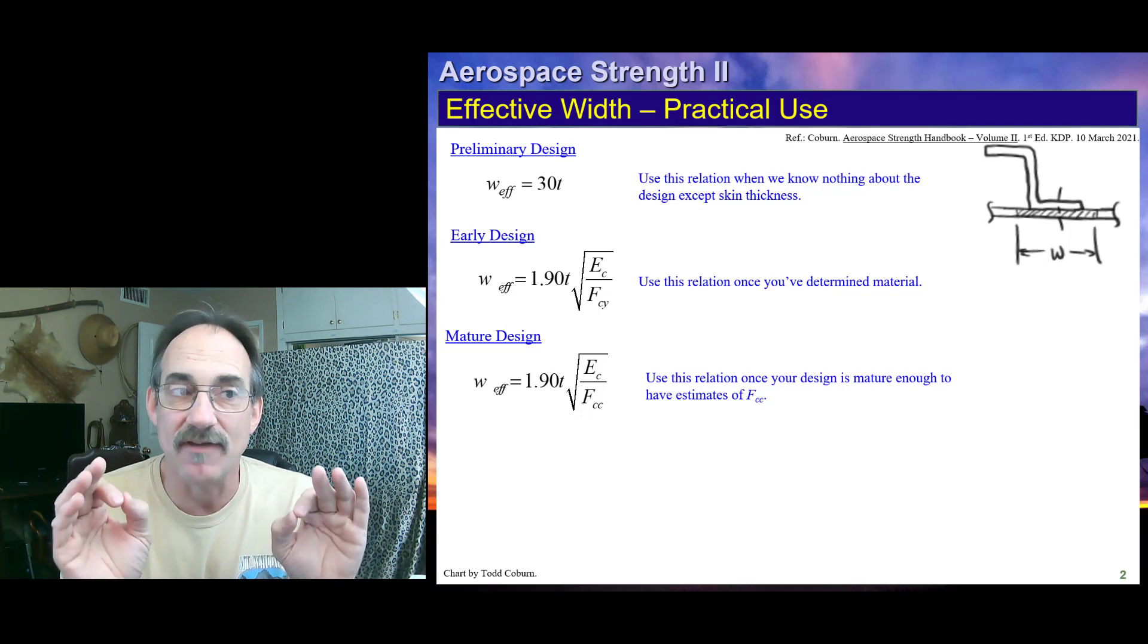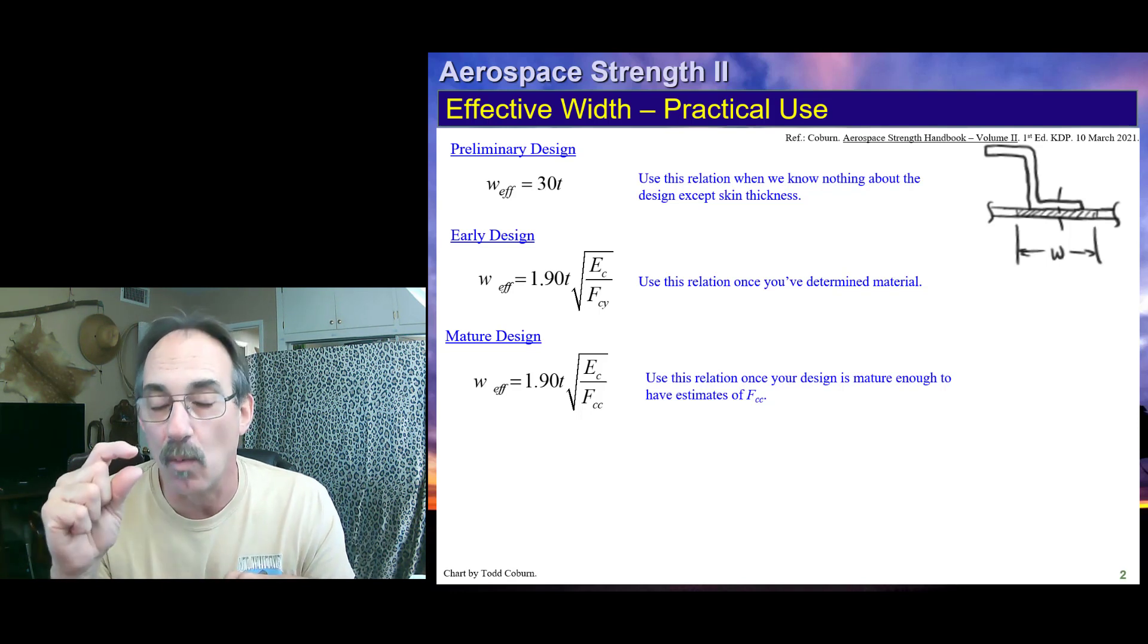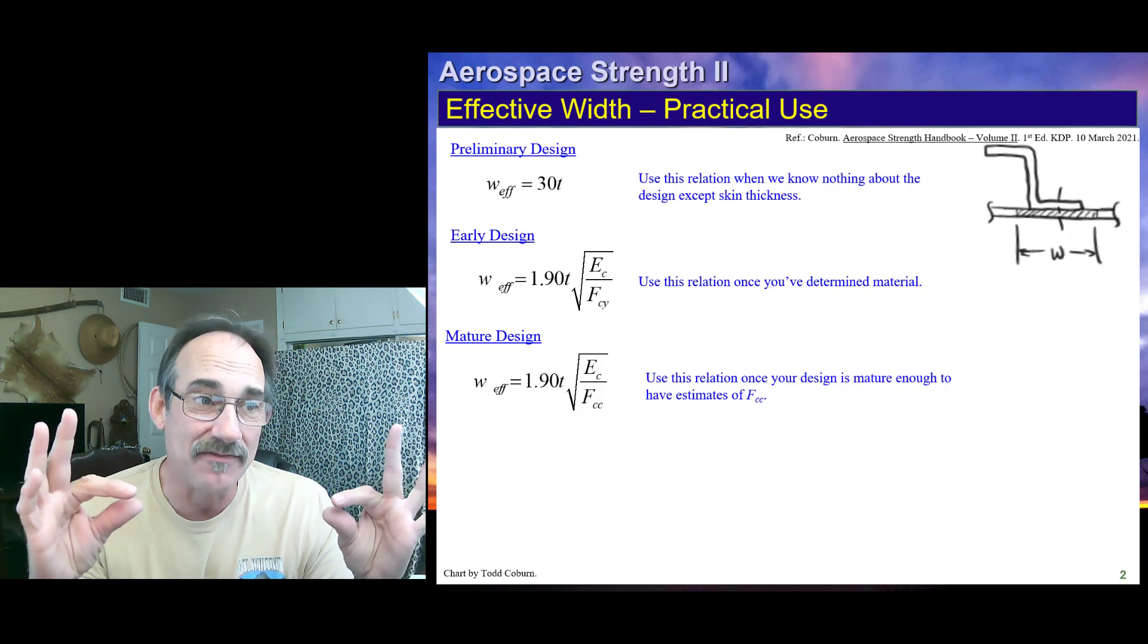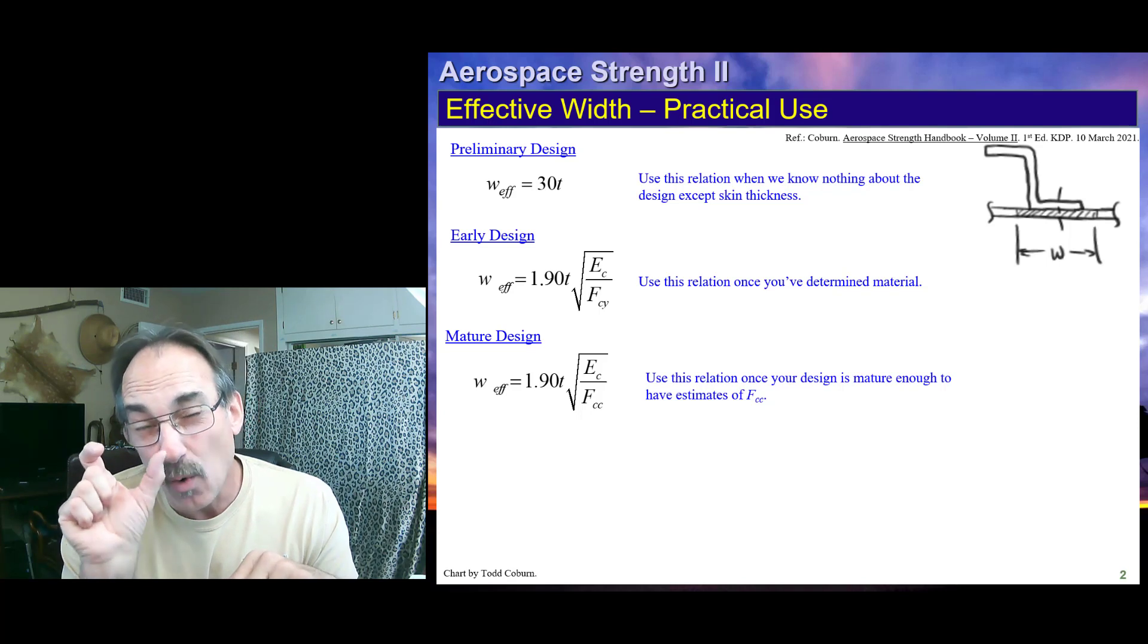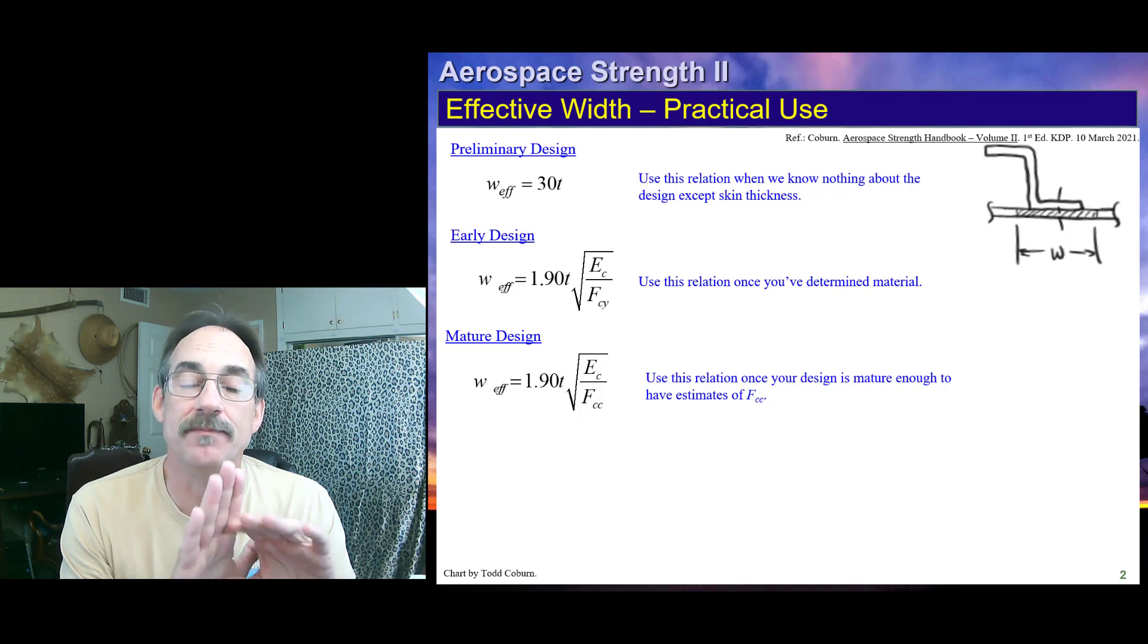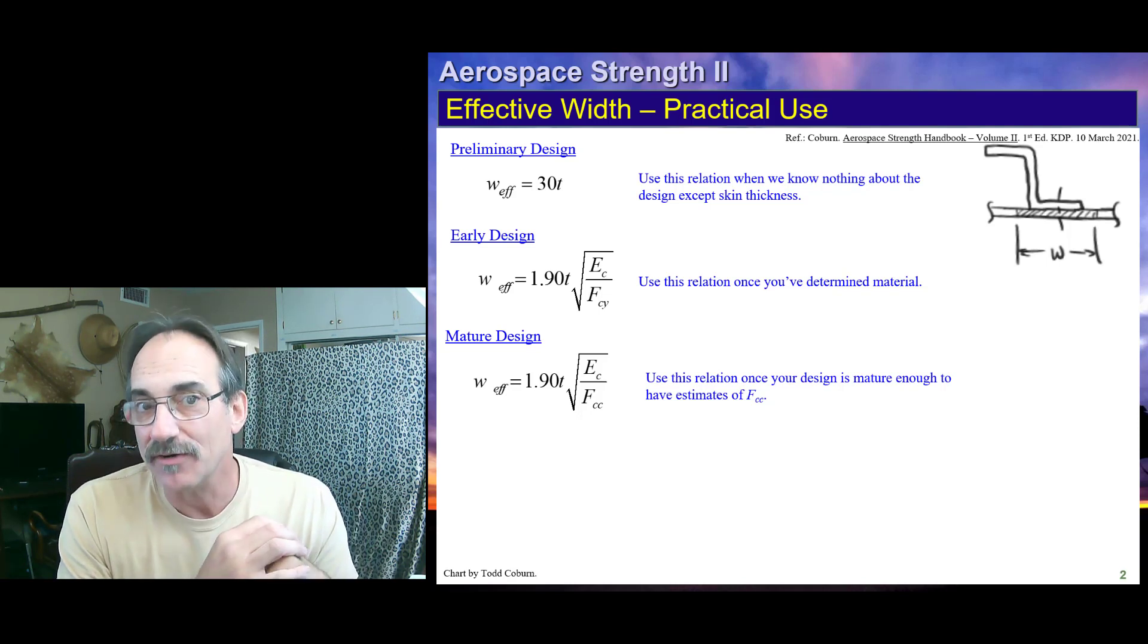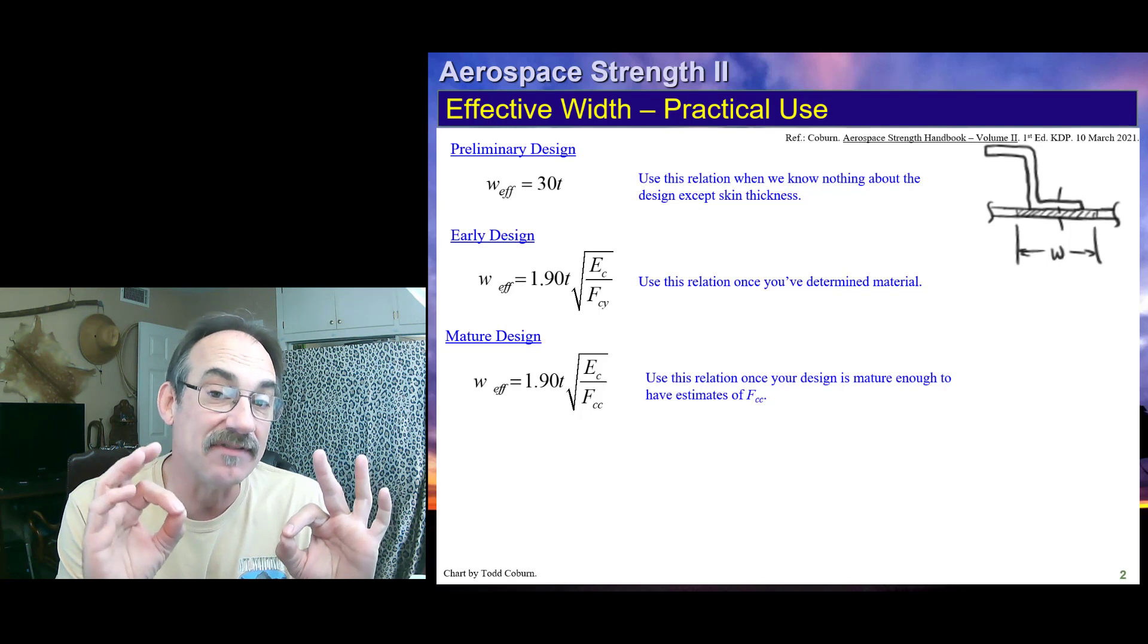If we're early in the design phase, it is common to use 30T of effective width. What that means is we find out what is the thickness of the thin member we're trying to add to our cross-section. In this case, it's a skin, a thin skin. And we can see what is the thickness of this, it's T. We're going to multiply that by 30, and that gives us the total width of skin that we can pretend acts with that stringer so that the stringer-skin combination is a single unit. This is what we're talking about. This is not using the thickness of the stringer itself, as some students seem to think. It is the thickness of the skin itself.